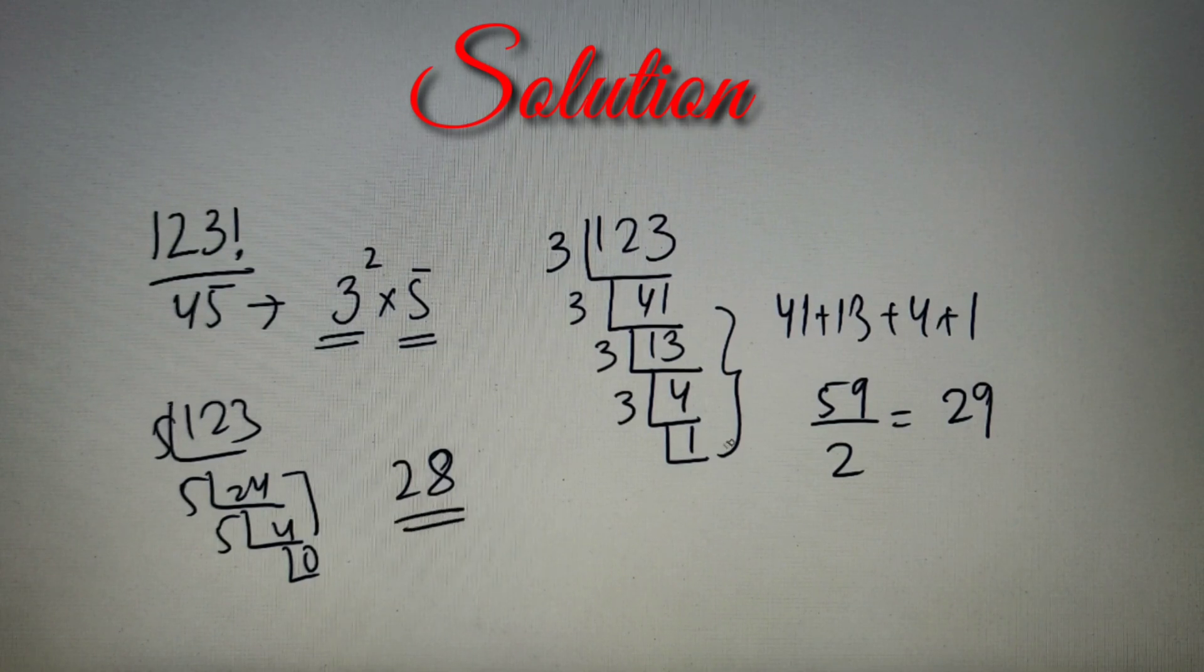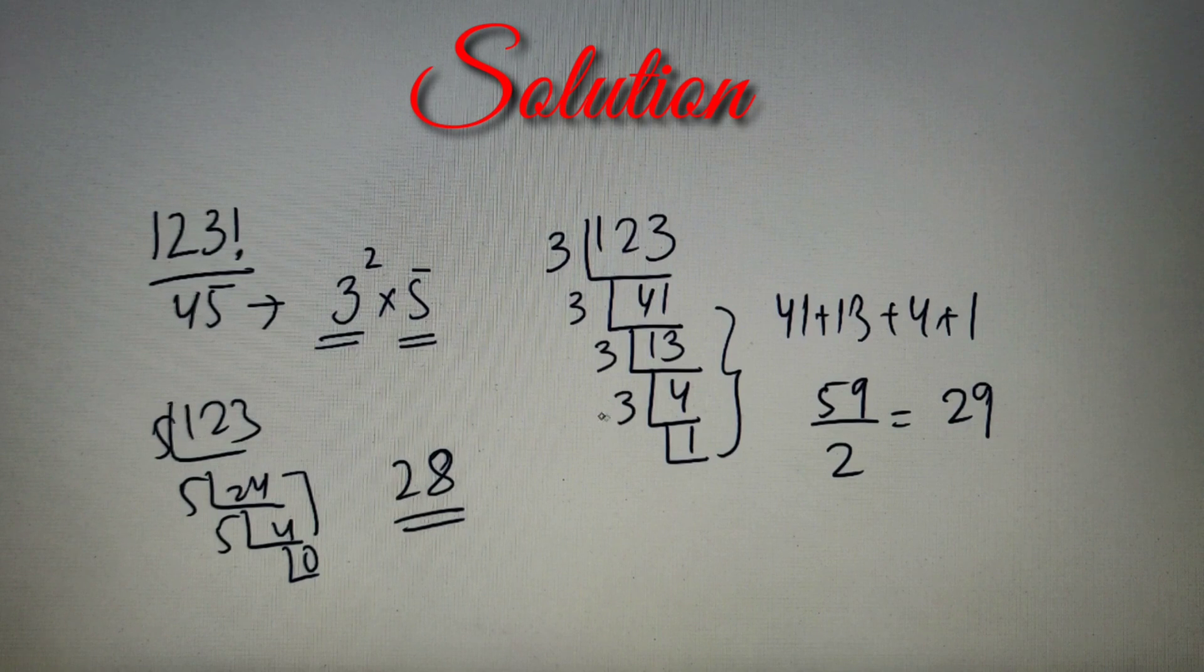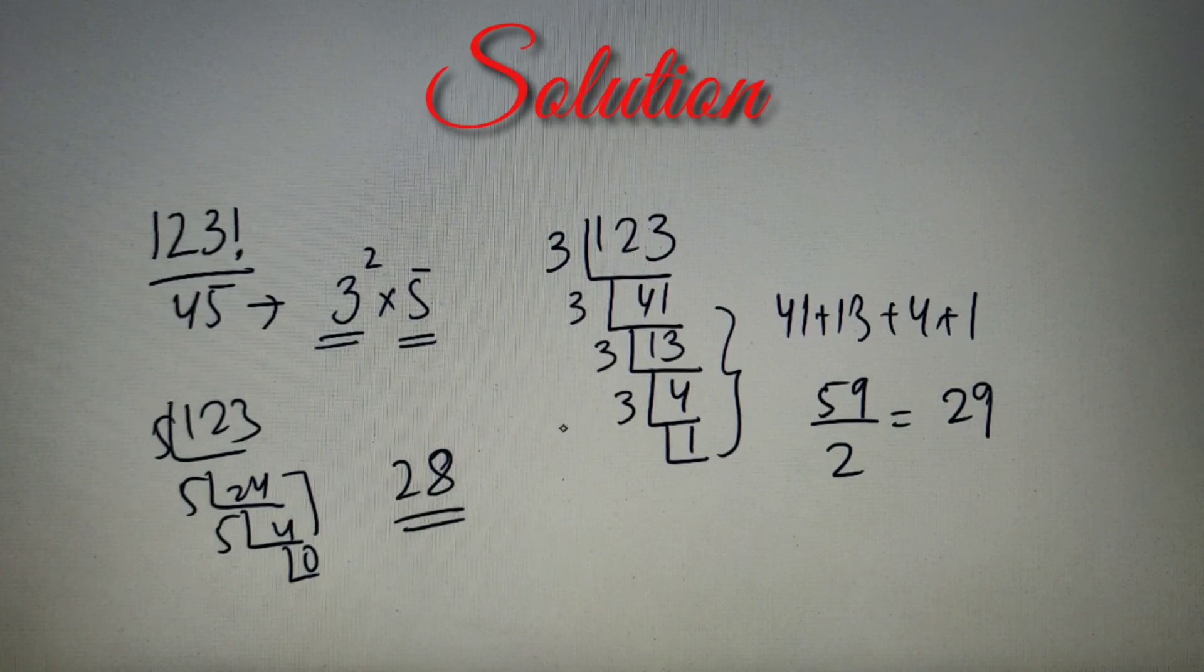Now the lower between these two numbers is 28, so we'll see that 28 is the highest power of 45 in 123 factorial, and according to the given options it is option number A.